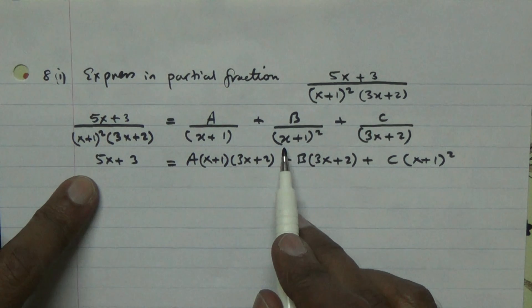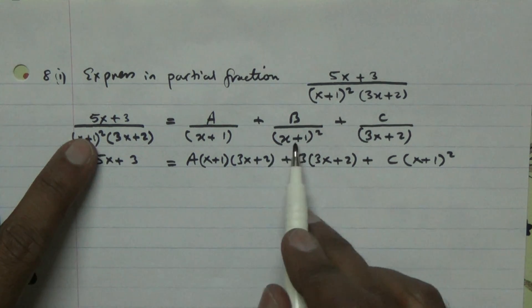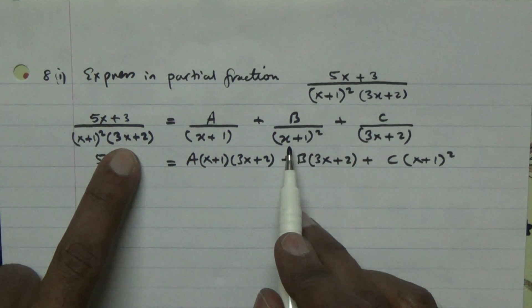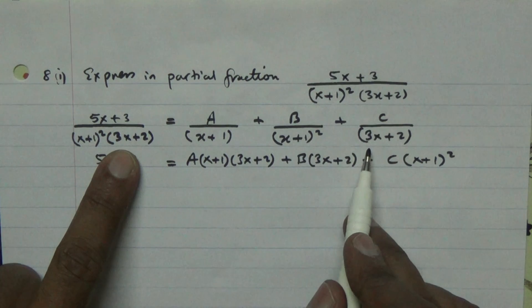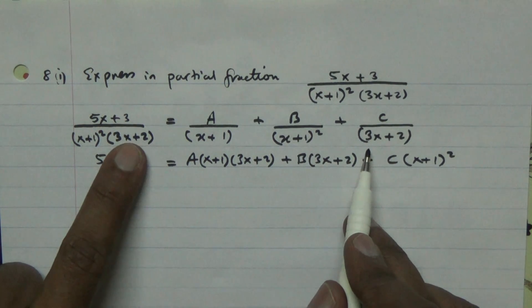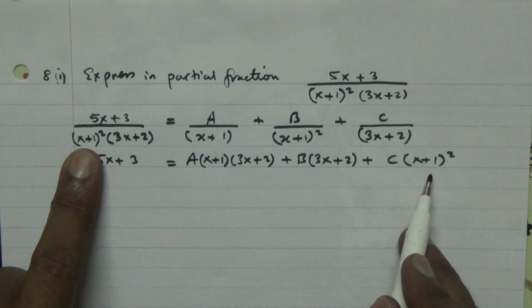The (x plus 1) squared cancels out, leaving (3x plus 2) times B. Then (3x plus 2) cancels out, leaving (x plus 1) squared times C.